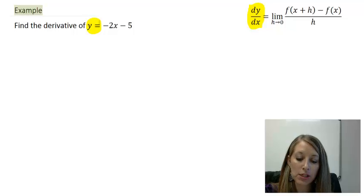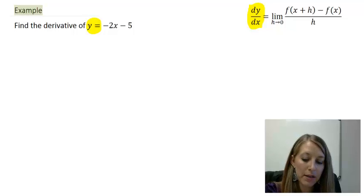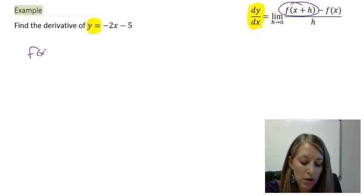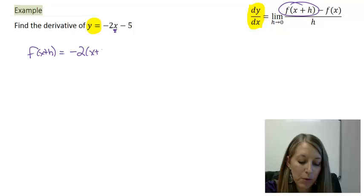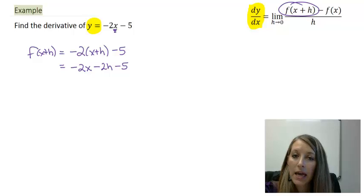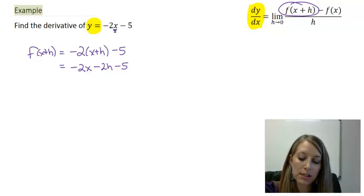Beyond that, our steps are just the same. The first step is to compute f of x plus h, meaning you plug x plus h into all of your x's in your function. So this is negative 2 times x plus h minus 5, which gives me negative 2x minus 2h minus 5. I cannot do anything more to simplify.